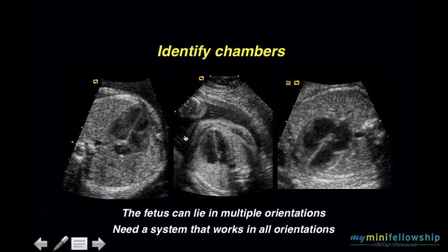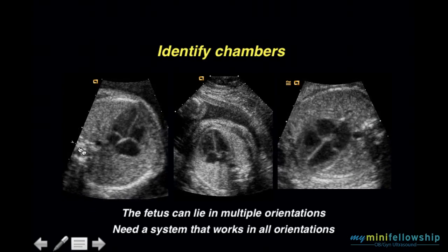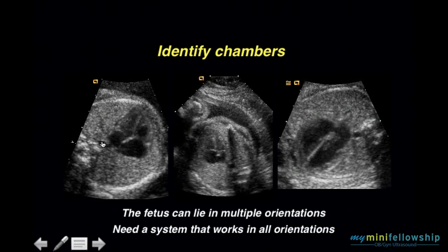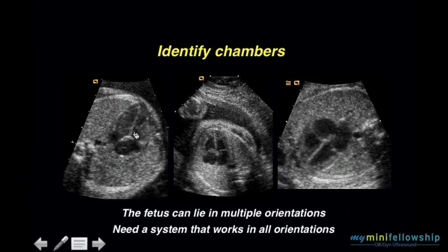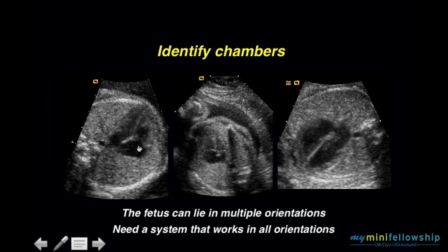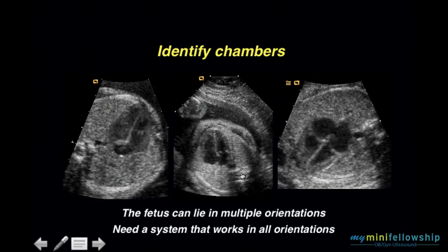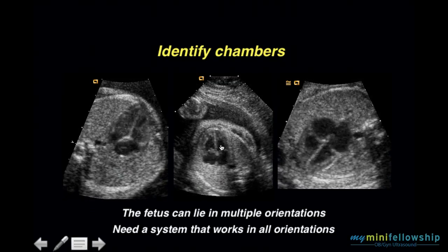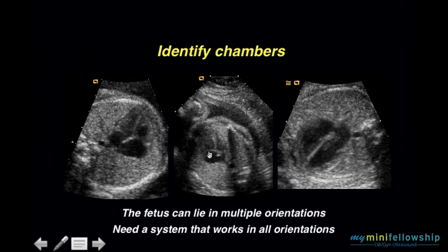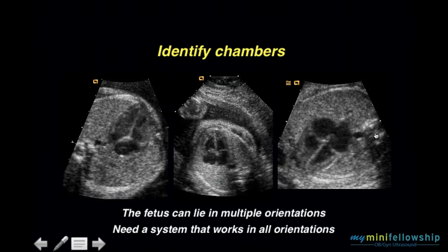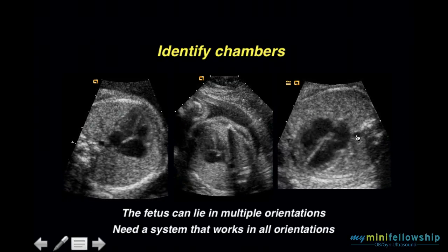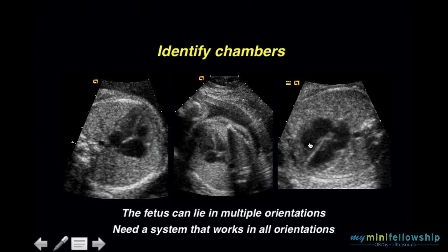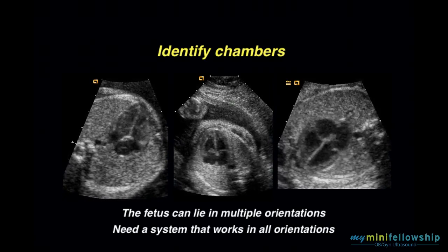Three fetuses, all in different orientations. For each one: spine, descending aorta, left atrium, left ventricle, right ventricle, right atrium. The system works consistently regardless of how the fetus is positioned.